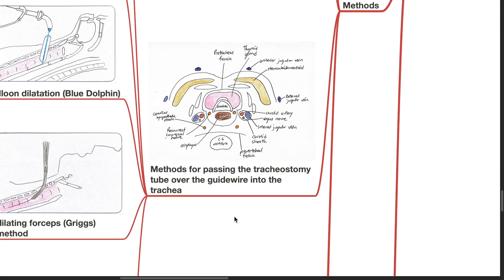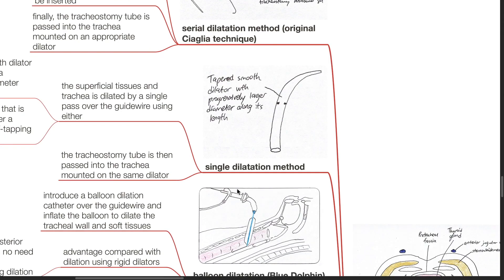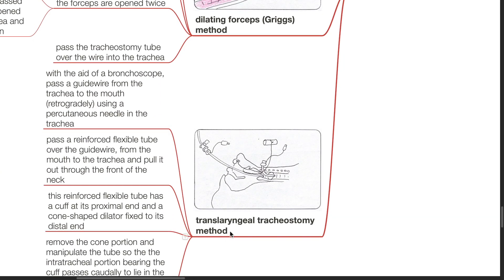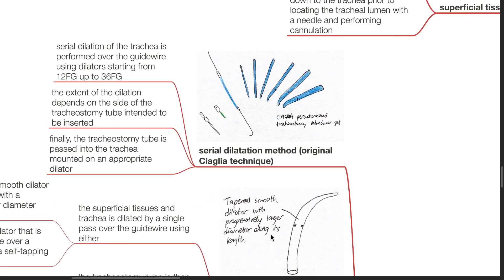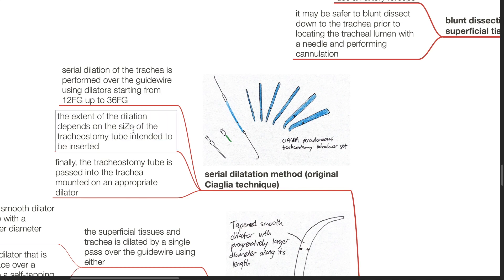Methods for passing the tracheostomy tube over the guide wire include: serial dilation method, single dilatation method, balloon dilatation method, dilating forceps method, and translaryngeal tracheostomy method. Serial dilation — the original Seldinger technique: serial dilation of the trachea is performed over the guide wire using dilators starting from 12 French up to 36 French. The extent of dilation depends on the size of the tracheostomy tube to be inserted. Finally, the tracheostomy tube is passed into the trachea mounted on an appropriate dilator.